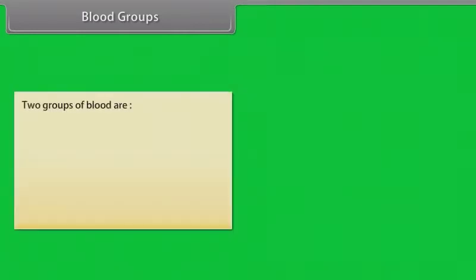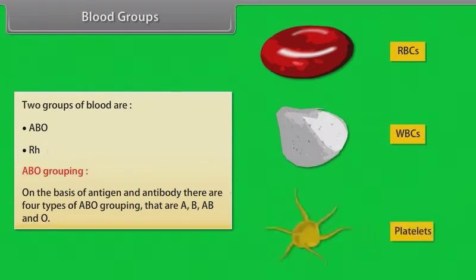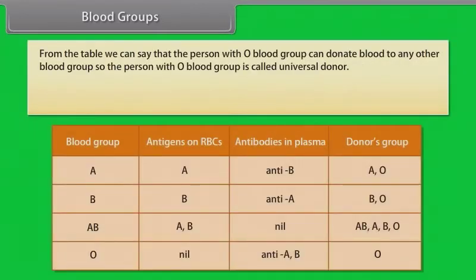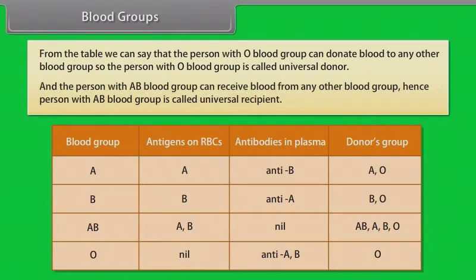There are two groups of blood: ABO and RH. On the basis of antigen and antibody, there are four types of ABO grouping: A, B, AB, and O. The person with O blood group can donate blood to any other blood group, so the person with O blood group is called the universal donor. The person with AB blood group can receive blood from any other blood group, hence the person with AB blood group is called the universal recipient.